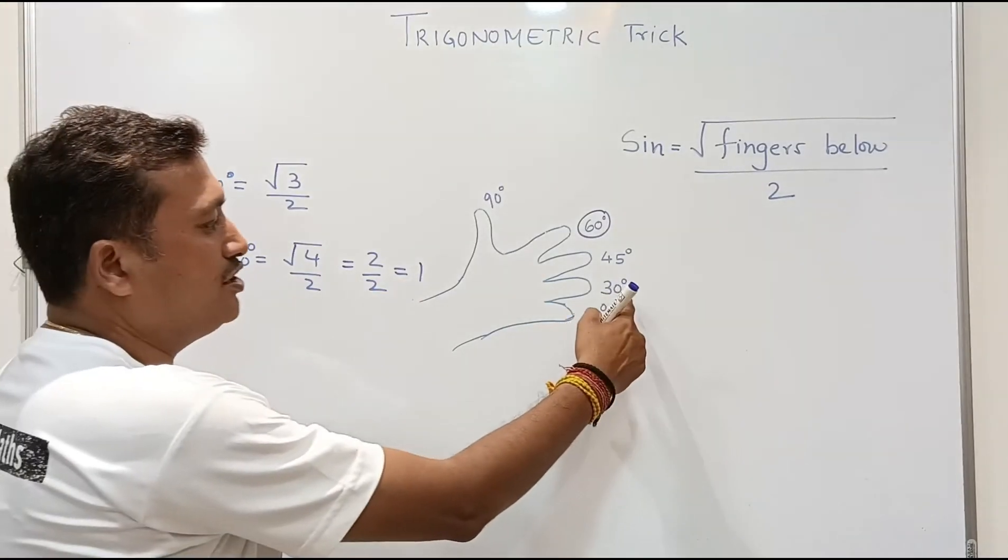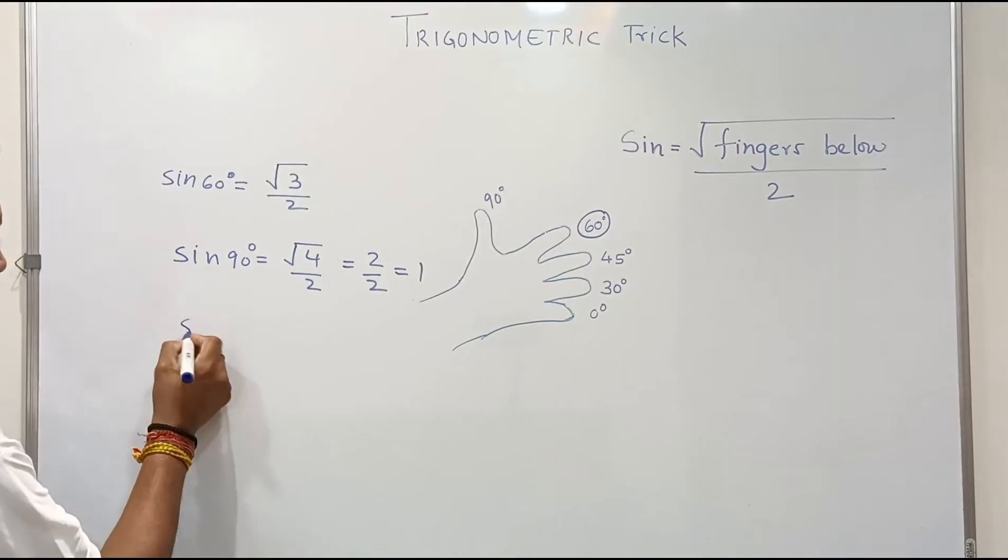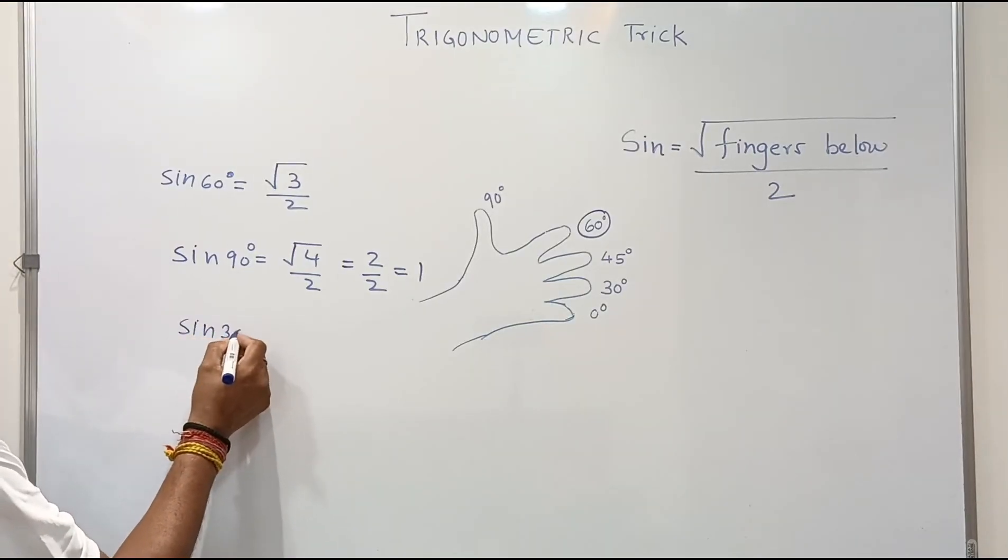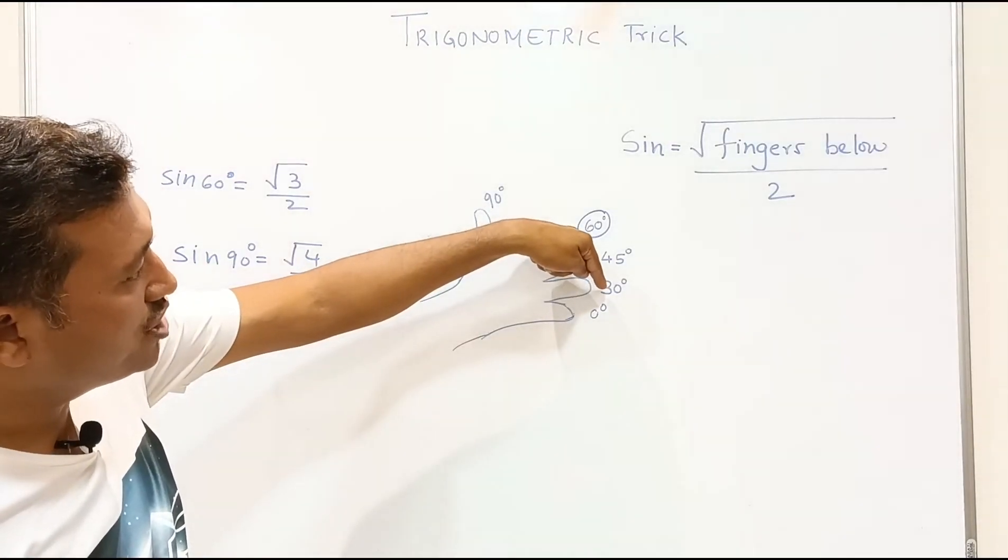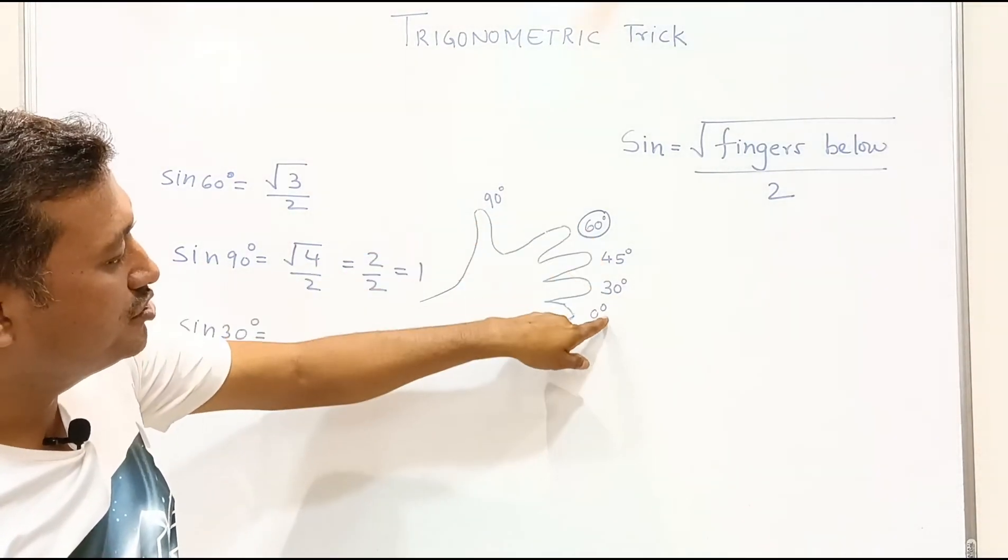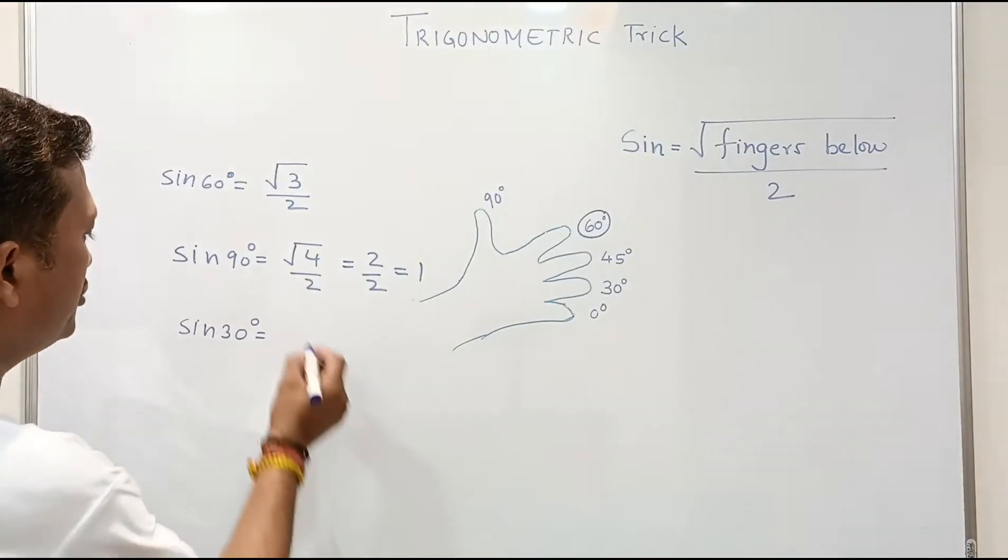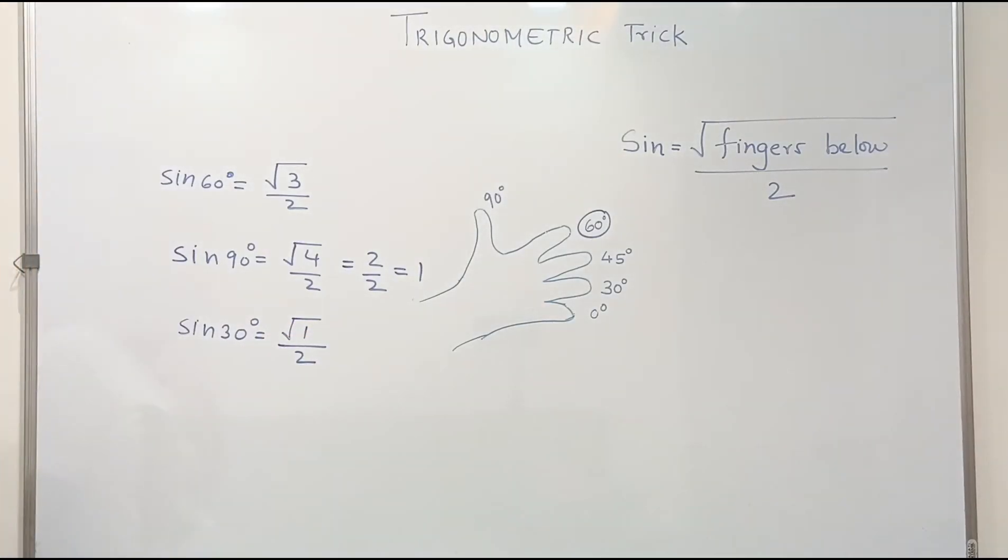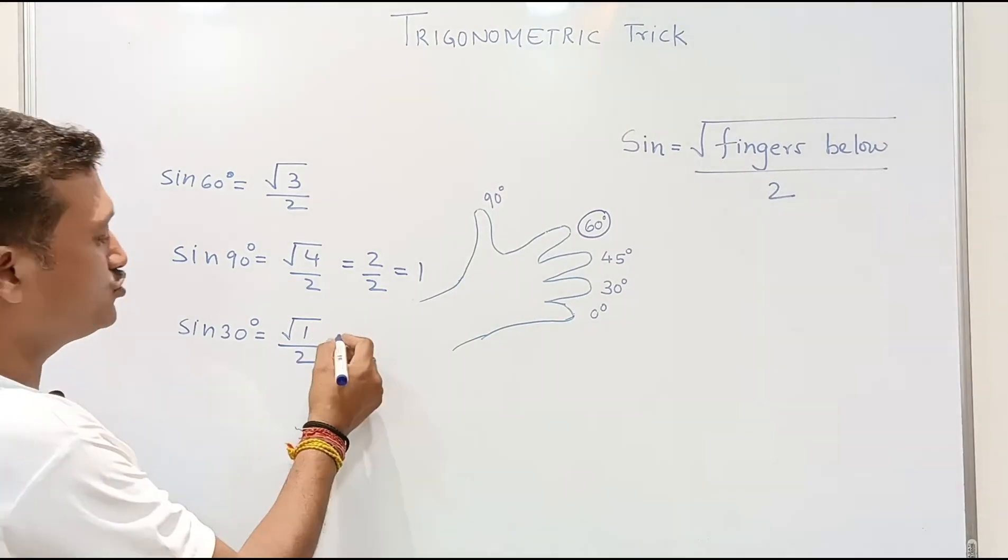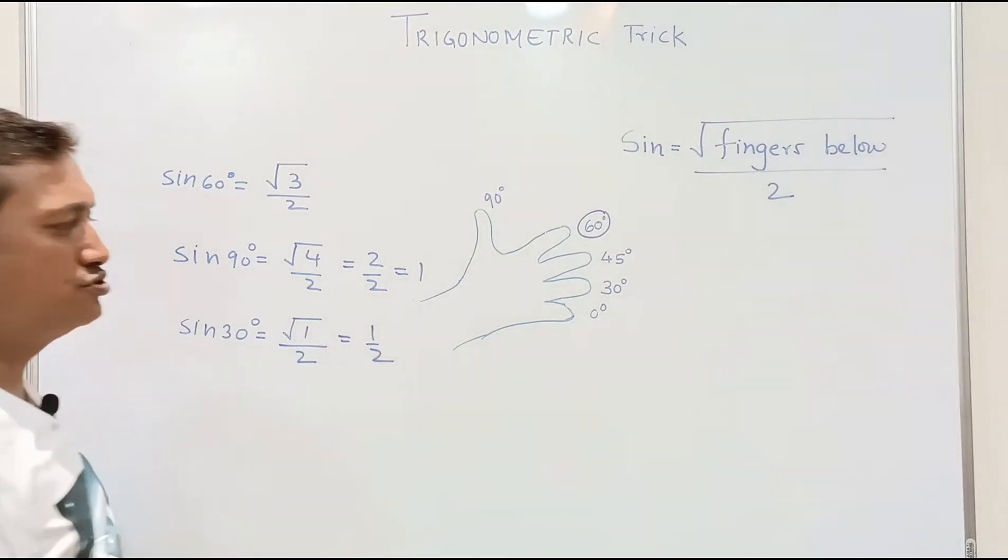Now similarly, we can find sine 30 degrees. Sine 30 degrees means fingers below 30 degrees. How many fingers can you see below 30 degrees? There is only one finger. So you will get square root of 1 over 2. Square root of 1 is 1, so it's 1 over 2.